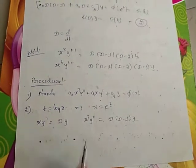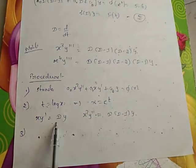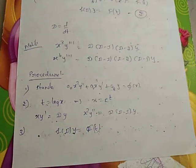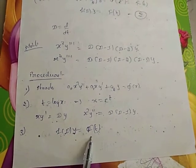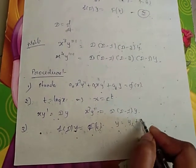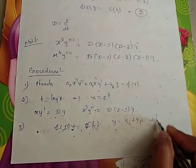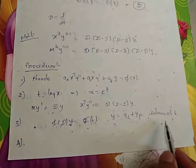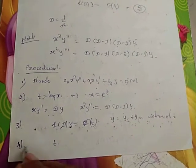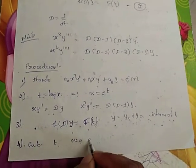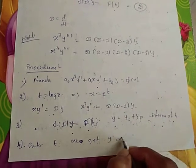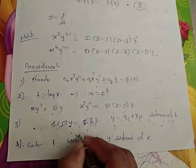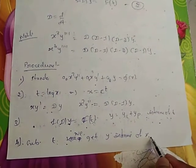If it is third order, use additional substitutions as well. After substituting these values, the equation is converted into a differential equation with constant coefficients. We then find the complete solution Y = Yc + Yp in terms of T. At the end, we re-substitute the value of T to get Y in terms of X.